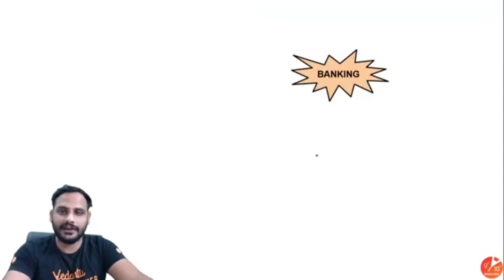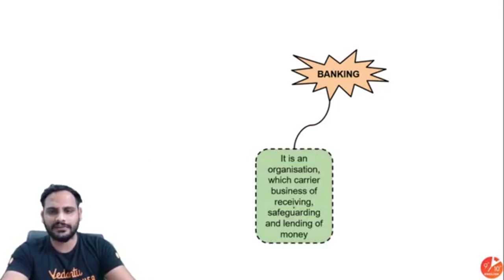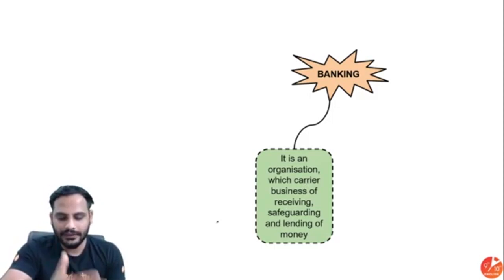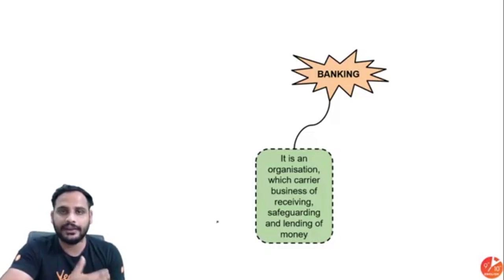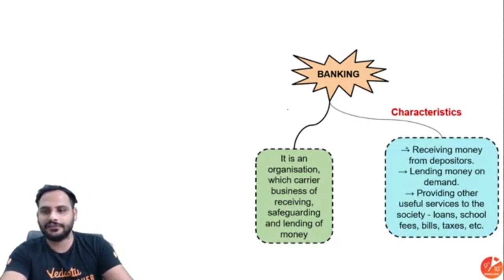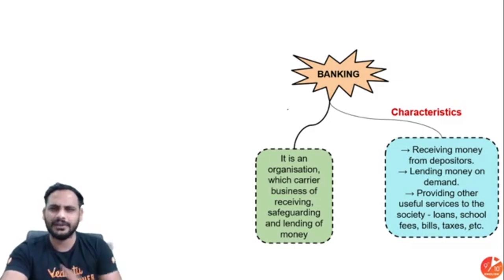Next topic is Banking. A bank is an organization that carries the business of receiving, safeguarding, and lending money. Banks either take money from you — paying you interest — or lend you money — charging you interest. The characteristics of banking include receiving money from depositors, lending money on demand, and providing other useful services to society such as loans, school fees, bills, and tax payments.